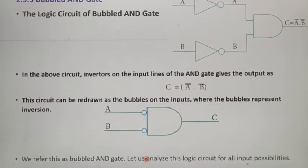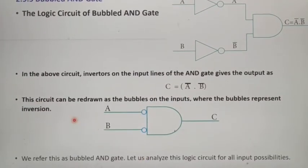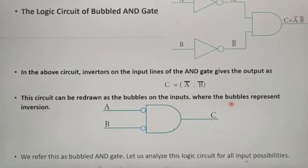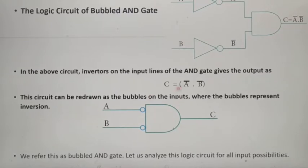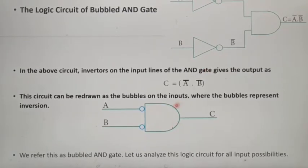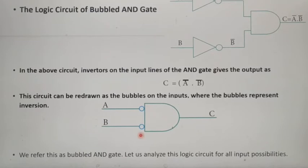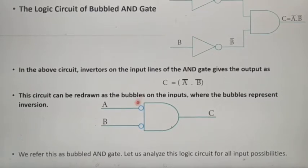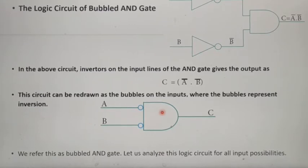This circuit can be redrawn with bubbles on the inputs, where the bubbles represent inversions. This same logic circuit is only redrawn here. Here this AND gate has two bubbles. Instead of two inverters, here two bubbles are given. So an AND gate with bubbles is called a Bubbled AND Gate.